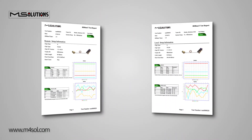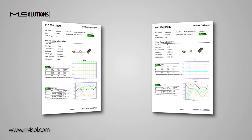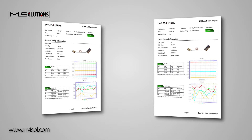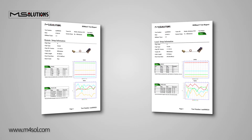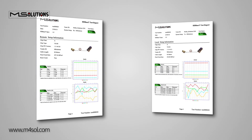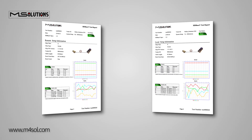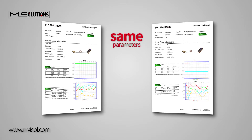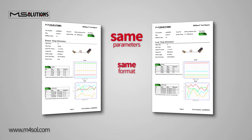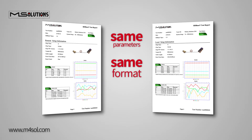Now let's have a look at the test results, which are found on the next two pages — one page for the transmitter, the other for the receiver. Both pages display the same parameters and are presented in the same format.